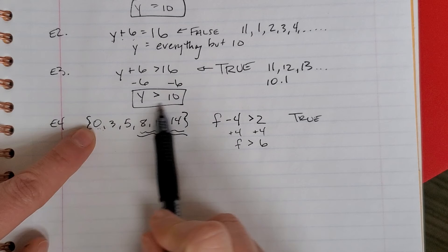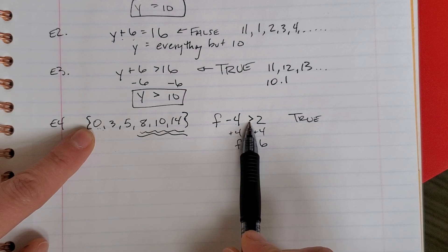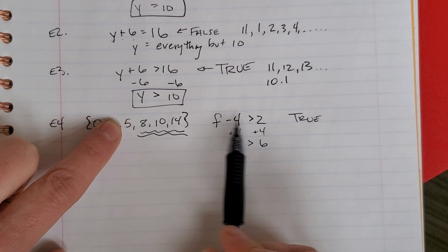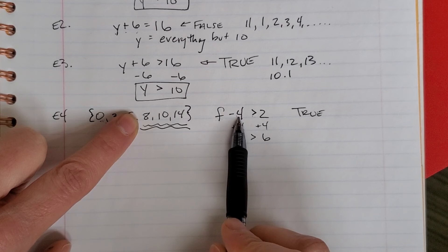0 minus 4 is negative 4. Negative 4 is not greater than 2. 3 minus 4 is negative 1. Negative 1 is not greater than 2. 5 minus 4 is 1. 1 is not greater than 2. 8 minus 4 is 4. 4 is greater than 2.